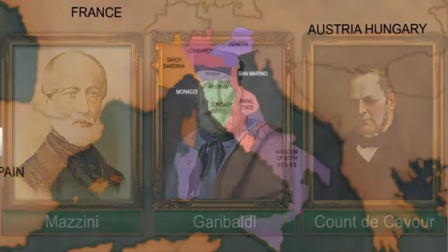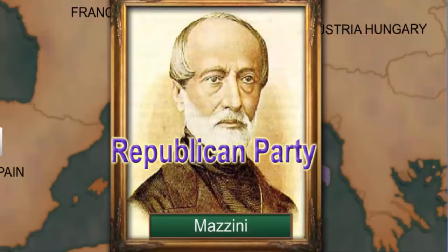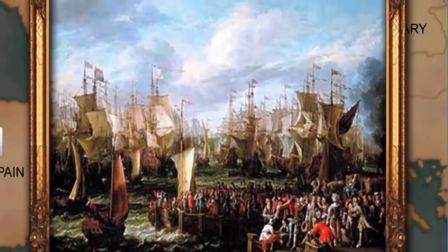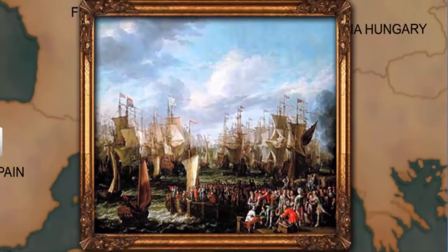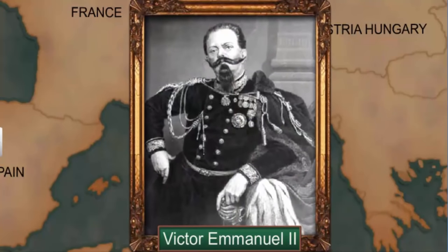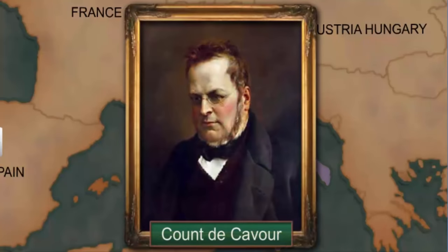Mazzini was the leader of the Republican Party. He had formed secret societies like Young Italy to regenerate Italy by education. However, the rebellion staged by the revolutionaries failed. Thereafter, the responsibility of unifying Italy came to Victor Emmanuel II, King of Sardinia-Piedmont. The Chief Minister of Piedmont, Count Camillo de Cavour, helped the king in forming an alliance with France, and they defeated the Austrian forces in 1859.